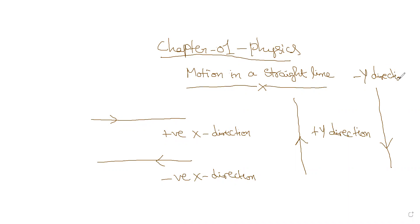So we will have only these four kinds of movement. Left to right is positive x direction, right to left is negative x direction. Moving upwards is positive y direction, moving downwards is negative y direction.